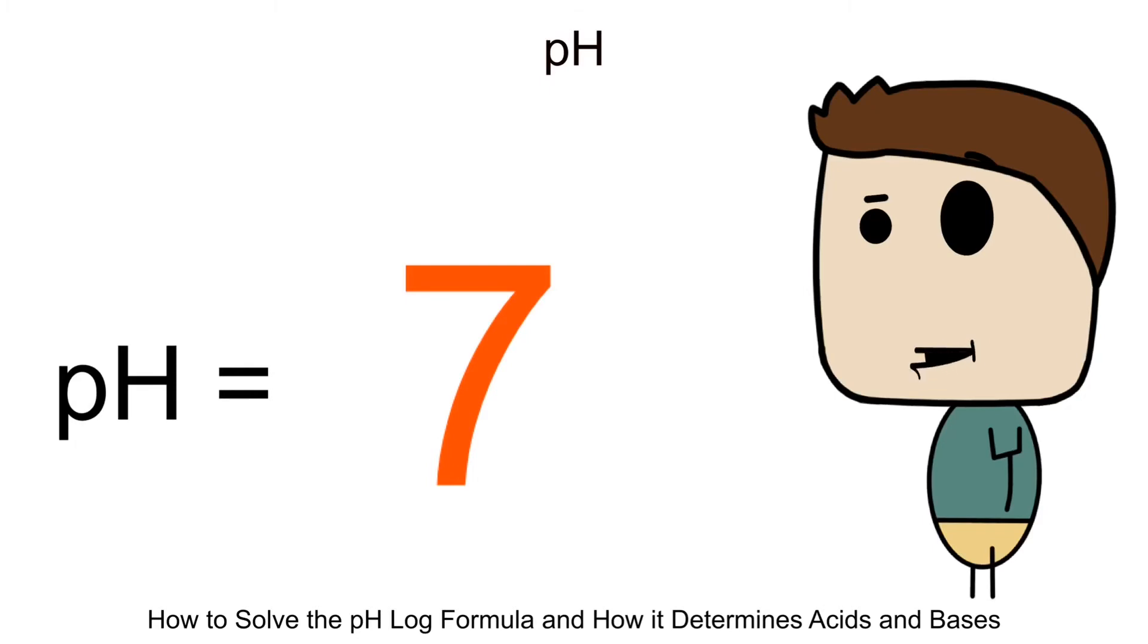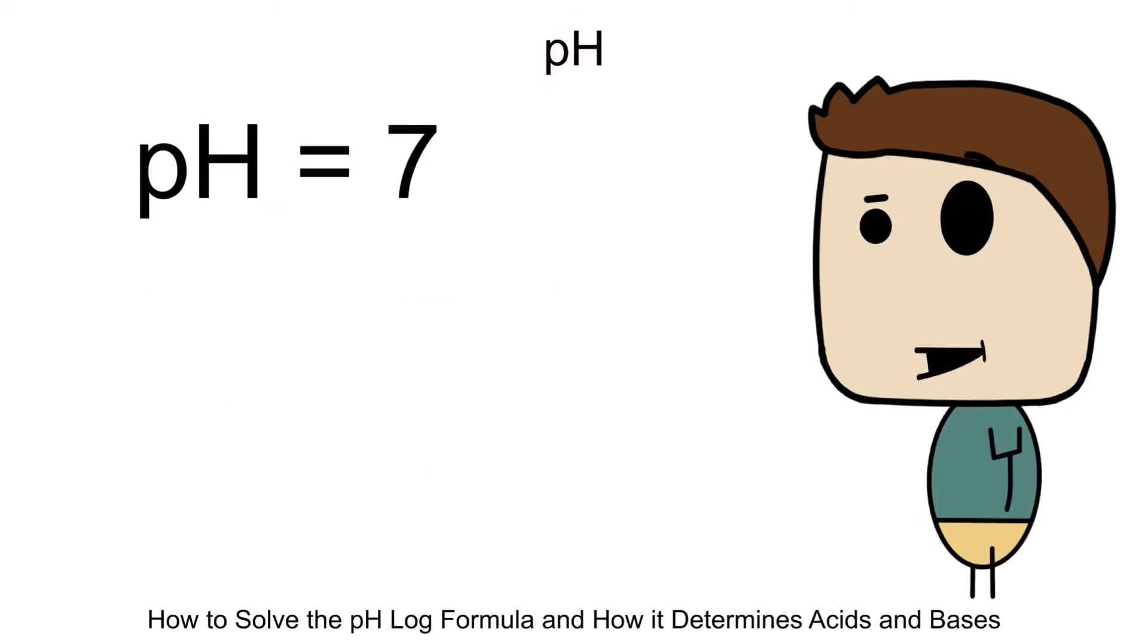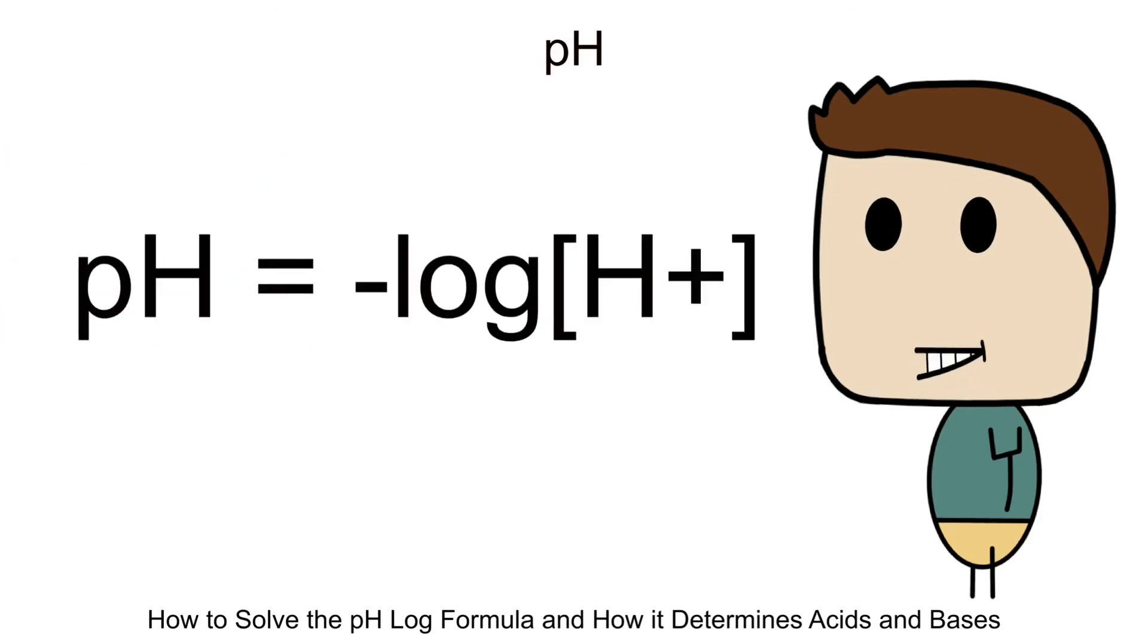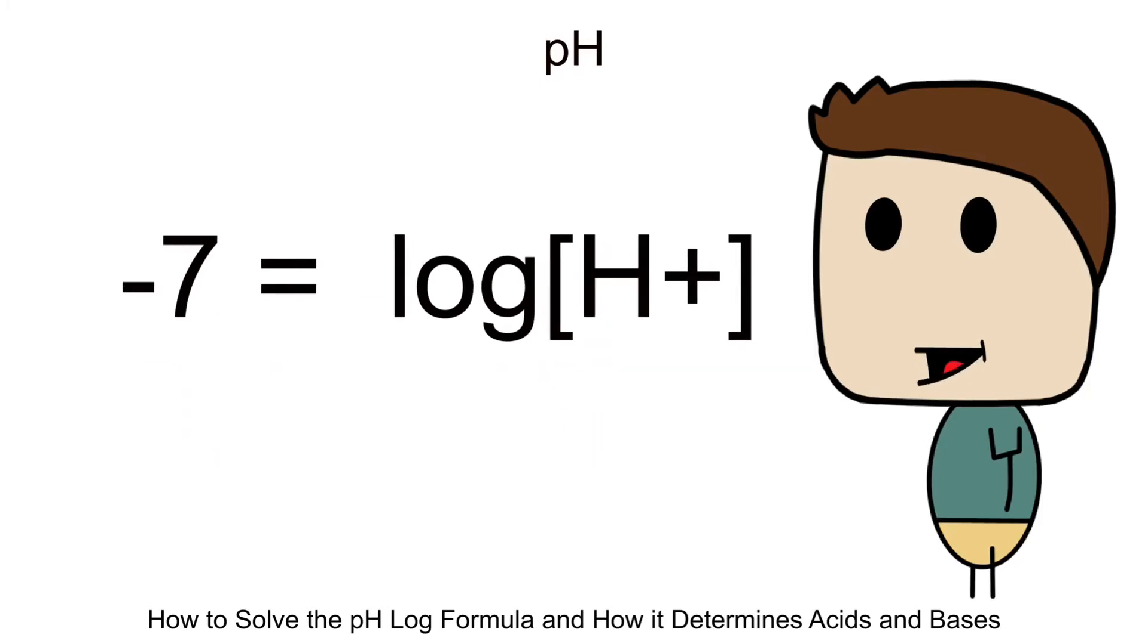Now what if the question instead gives you the pH number of pure water, which is 7 by the way, and asks for the H plus concentration? We're going to have to rearrange the formula a bit to make it easier to visualize. Most calculators don't have the function anti-log, which would make things super easy. What we need to do now is to understand how the log function works. We work backwards. Since pH is 7, we plug it in like so. Let's simplify it further because conceptually it's kind of hard to understand what a negative log really is. So let's divide both sides by negative 1. That will negate the negative on the log side, but it will also put a new negative on the 7. Now we have negative 7 equals log base 10 of H ions.